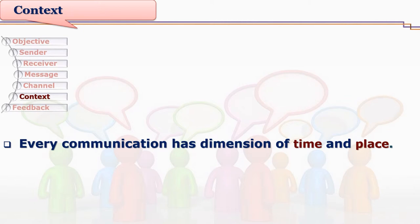Every communication has a dimension of time and place. Any communication starts at some time and ends at some time, so we can say during which period and for how much time a particular communication took place. There is also always a context of place — where the communication happened — which can be answered by analyzing the communication process, even for distance or social media communication.